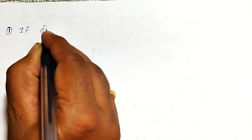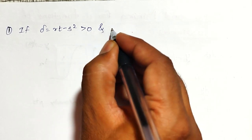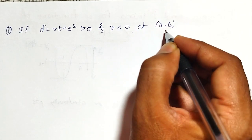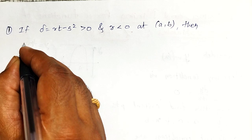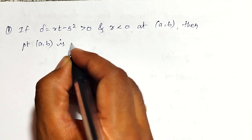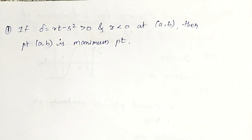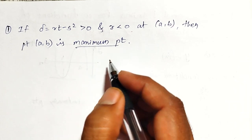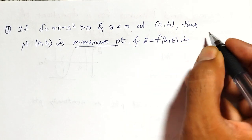First case: if delta equal to r t minus s square is greater than zero and r is less than zero at a, b — where a, b is a critical point — then point a, b is a maximum point. And z equal to f of a, b is the maximum value.